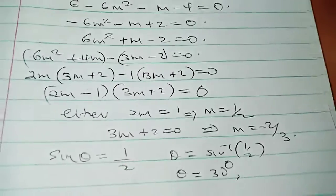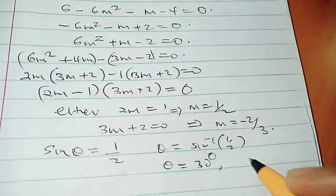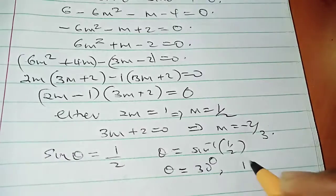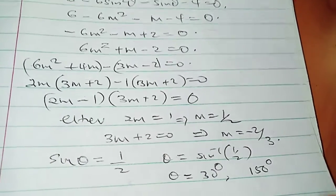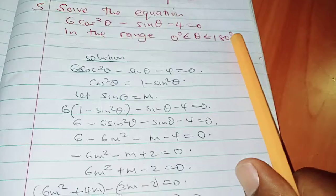And that is found in the first quadrant. So if you go to the second quadrant, you take 180 - 30, you have 150 degrees. And those two angles are enough as far as this range is concerned.